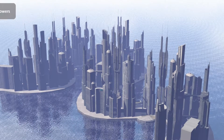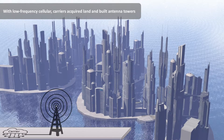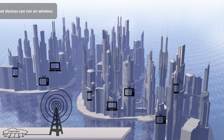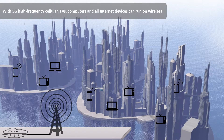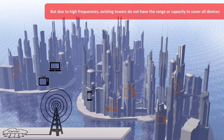In the first generations of wireless networks, carriers acquired land and built antenna towers to reach all the mobile phones that we use today. Now with 5G and high-frequency cellular, TVs, computers, and all internet devices can run on wireless. The problem is these high frequencies — existing towers don't have the range nor the capacity to cover all of our devices.